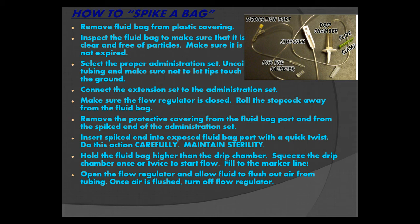Select the proper administration set — this is dependent on the type of patient and your partner's preferences, so double-check before you open one up. Uncoil the tubing and make sure not to let the tips touch the ground. Connect the extension set to the administration set per partner preference — some prefer to have the extension set free and connect it directly to the IV catheter once it's patent. Make sure the flow regulator is closed; roll the stopcock all the way away from the fluid bag to clamp the tubing and prevent fluid from leaking through.